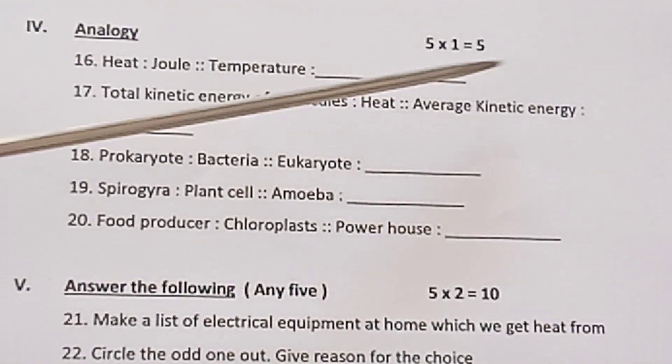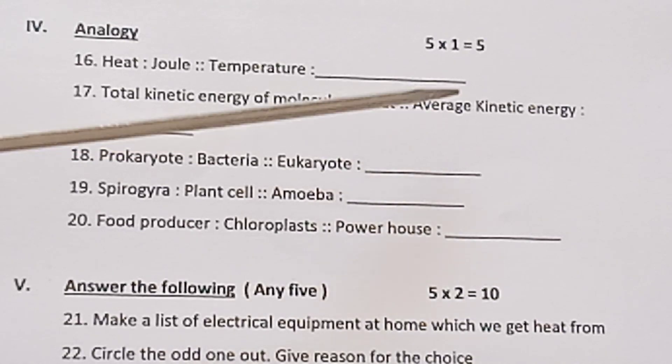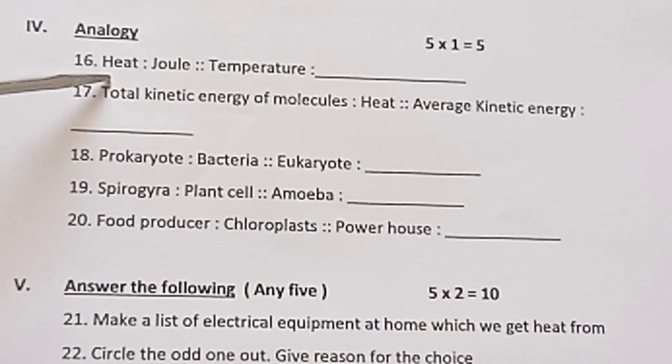Section IV: Analogies. 5 × 1 = 5. Question 16: Heat : Joule :: Temperature : ___. Question 17: Total kinetic energy of molecules : Heat :: Average kinetic energy : ___.